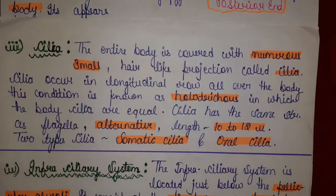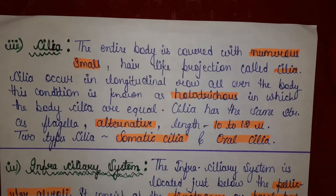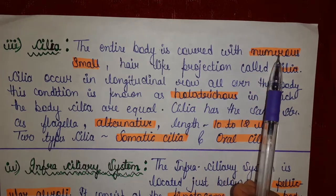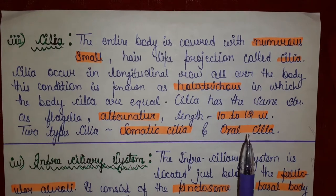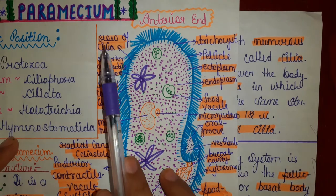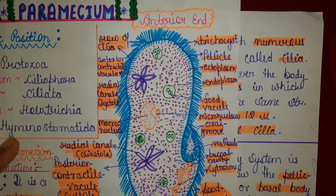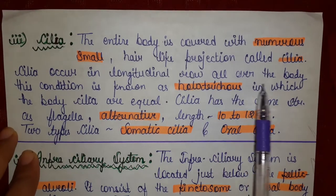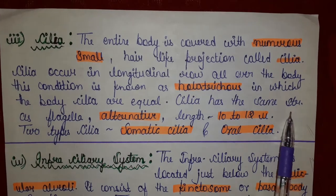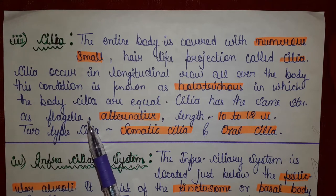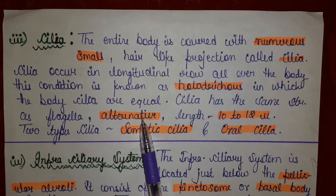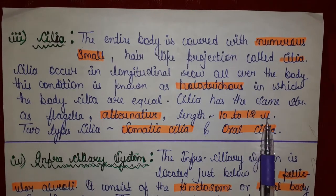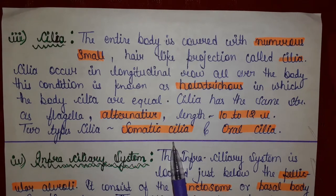Now we will study about cilia. The entire body is covered with numerous small hair-like projections called cilia. Cilia occur in longitudinal rows all over the body; this condition is known as holotrichus, in which the body's cilia are equal. Cilia has the same structure as flagella. The length of cilia is 10 to 12 microns. There are two types of cilia: somatic cilia and oral cilia.